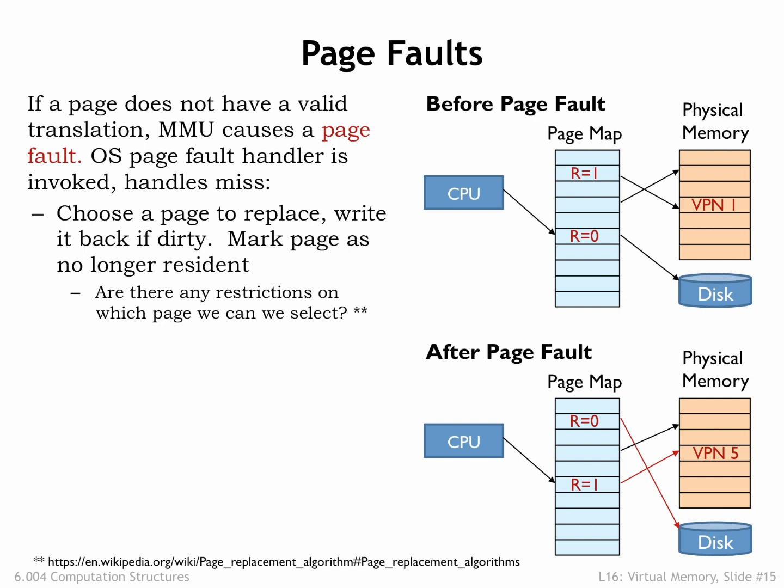In our example, the handler has chosen virtual page 1 for reuse. If the selected page is dirty, i.e., its D-bit is 1 indicating that its contents have been changed since being read from secondary storage, write it back to secondary storage. Finally, mark the selected virtual page as no longer resident.